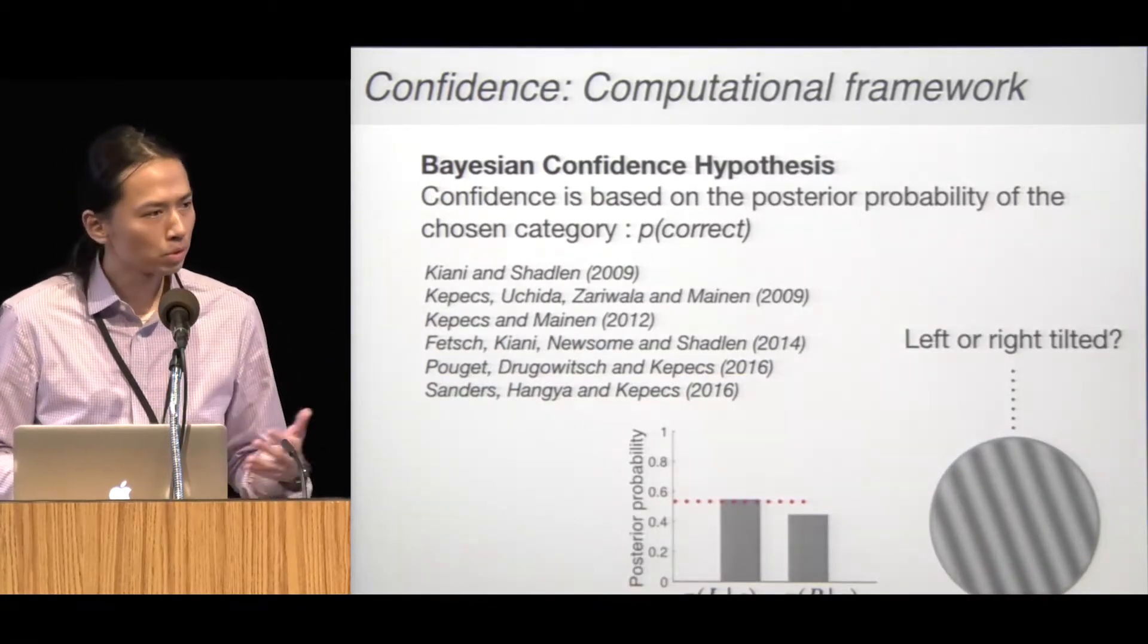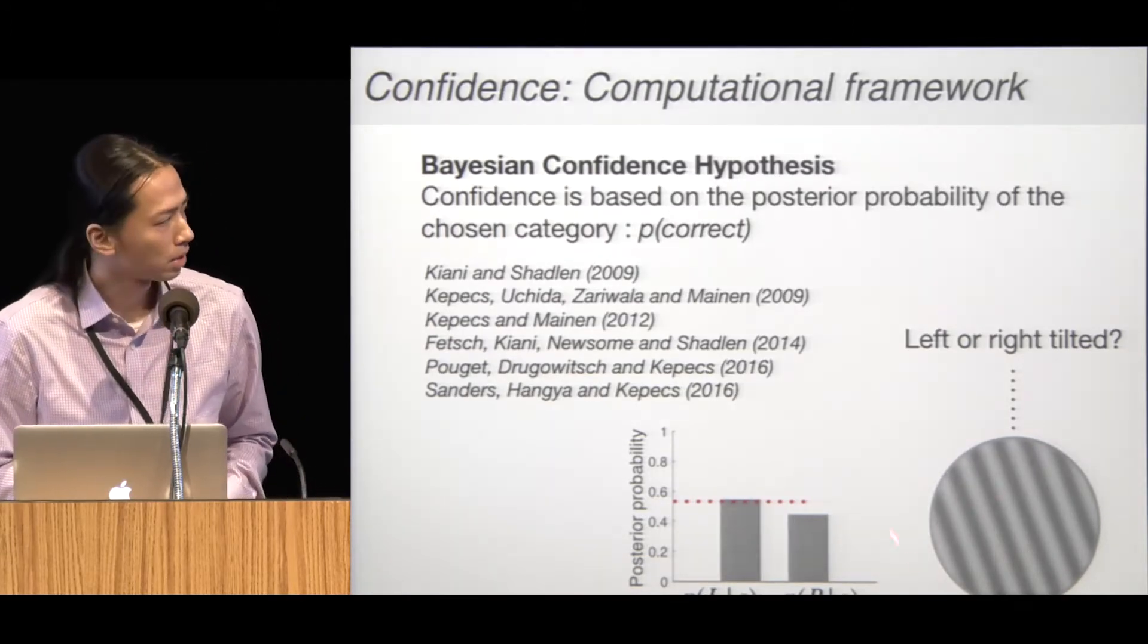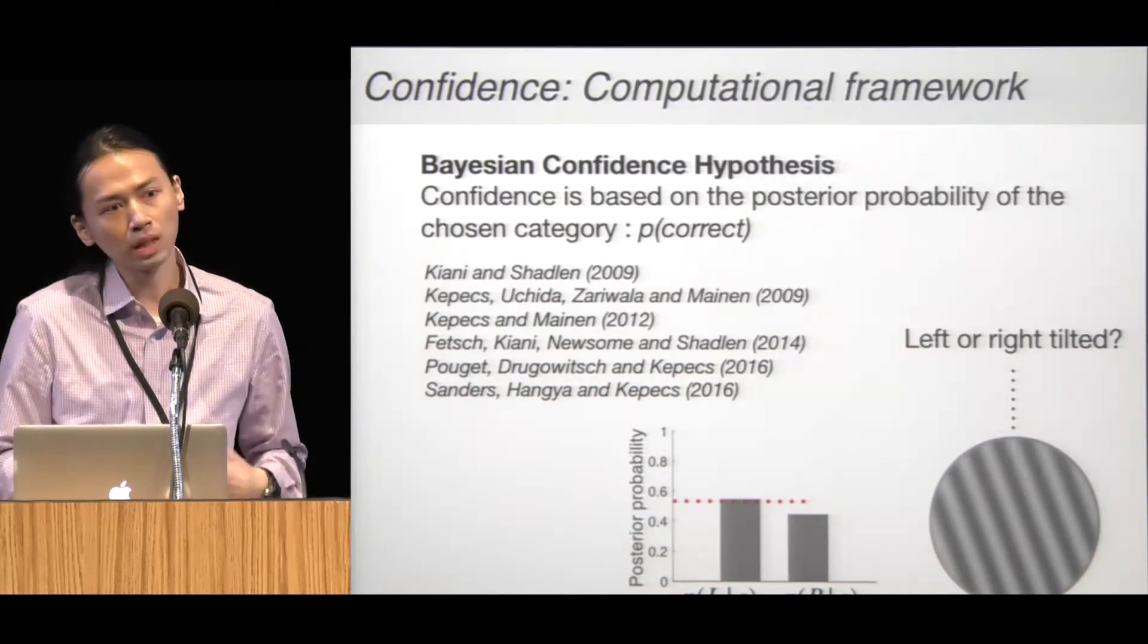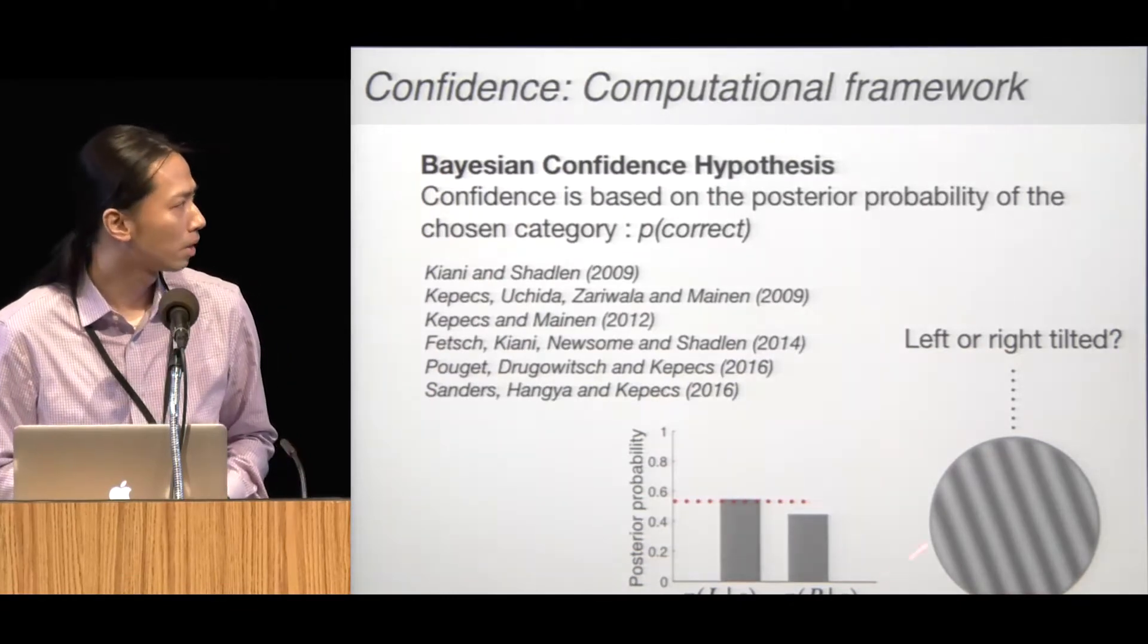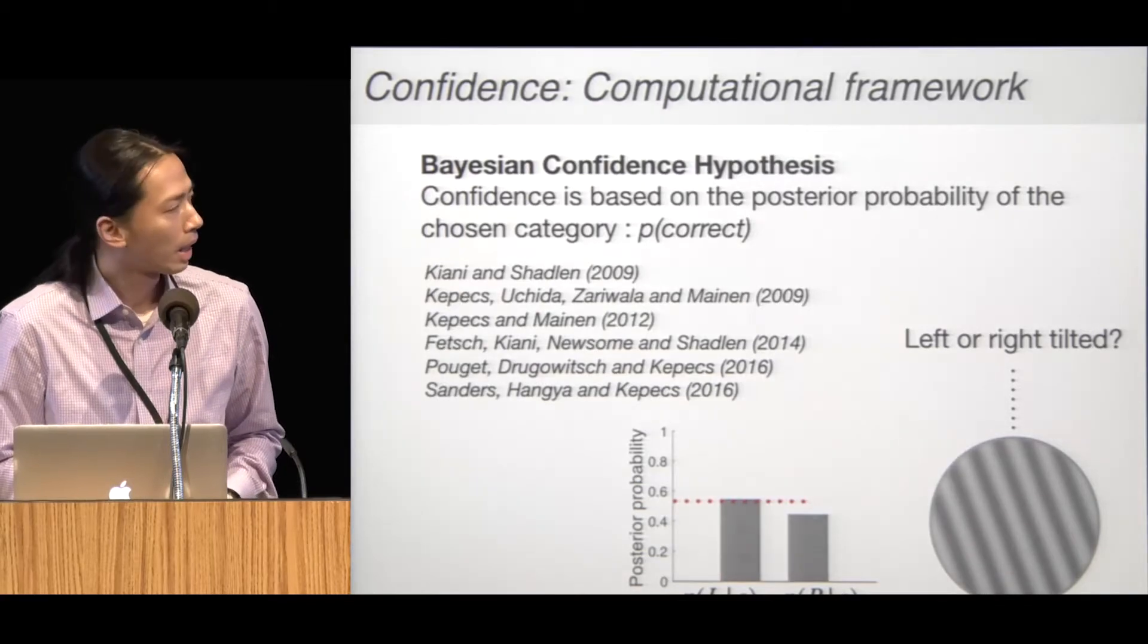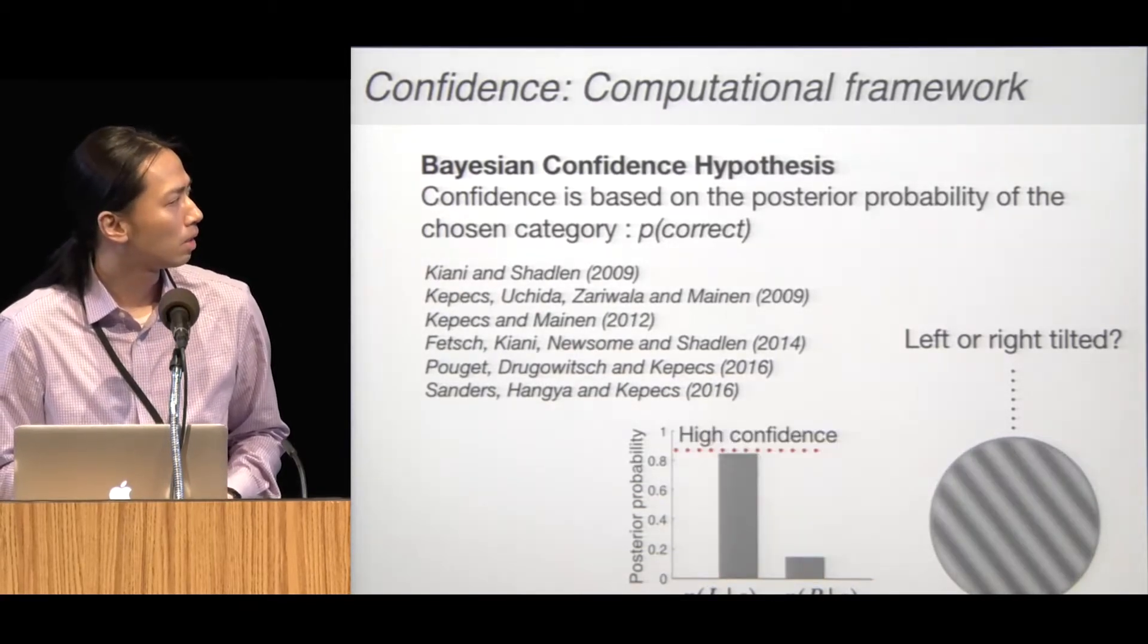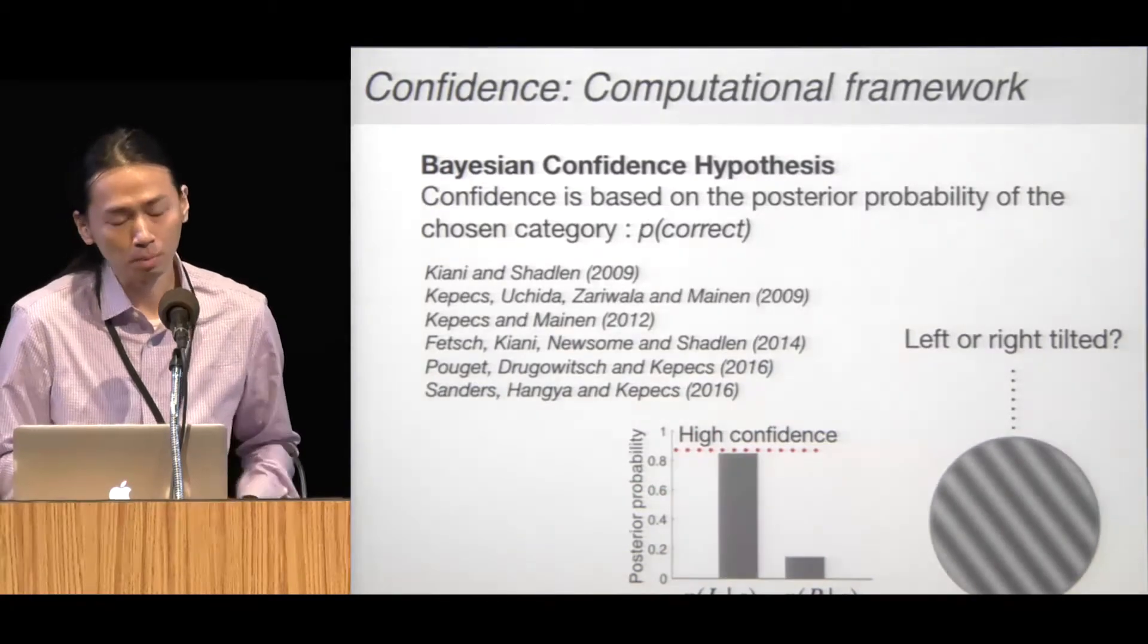For example, in a simple two-alternative orientation discrimination task, based on the stimulus, observers can compute the posterior that the stimulus is a left-tilted or a right-tilted grating. And confidence increases with the posterior of the chosen probability.